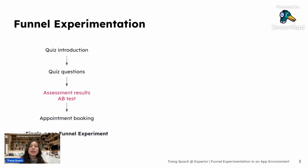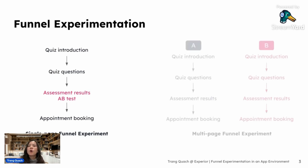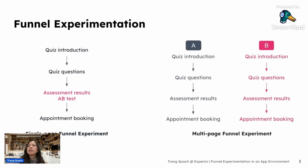This particular case is the assessment results page. Within this page, it's been identified that there's been high drop-off, and that's why most of the optimization effort was dedicated to this page. On the other hand, multi-page funnel testing takes a more holistic approach by optimizing two or more steps in the user journey — such as the query question areas, the assessment results, and potentially the appointment booking area as well.